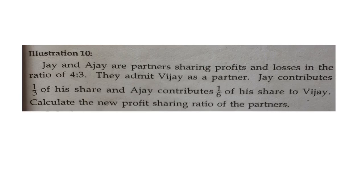Good morning students. From the previous class: J and Ajay are partners sharing profits and losses in the ratio of 4:3. They admit Vijay as a new partner. J contributes 1/4th of his share and Ajay contributes 1/6th of his share to Vijay.